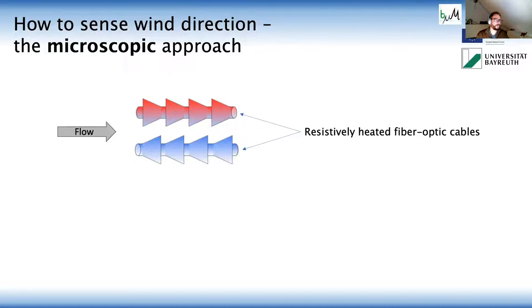And here I would like to present what we call the microscopic approach. So let's assume we have two resistively heated fiber optic cables. We already learned about active distributed temperature sensing. And we have some structures here in shape of cones printed onto these cables. And assume we've exposed these two cables to a flow speed and air speed.